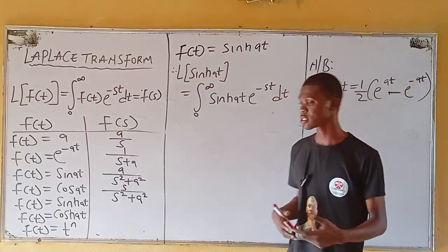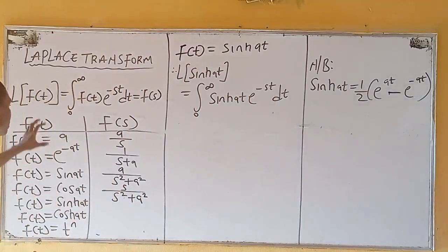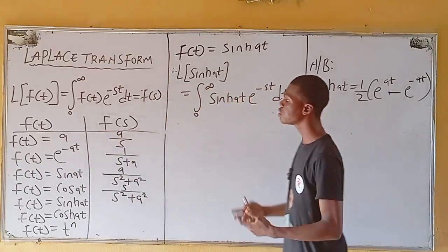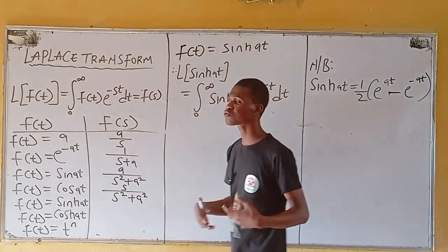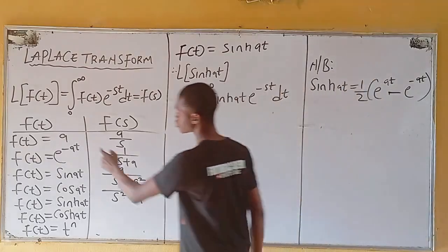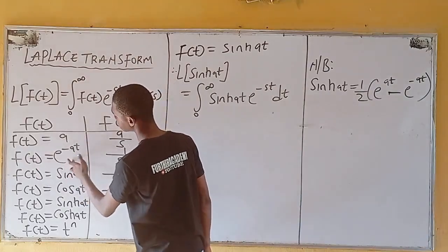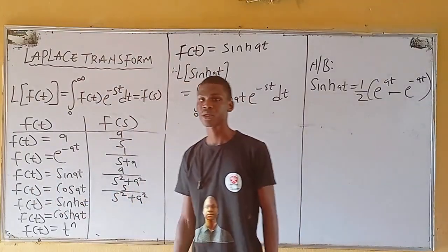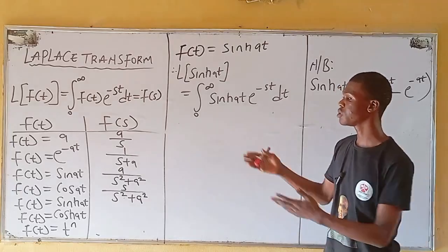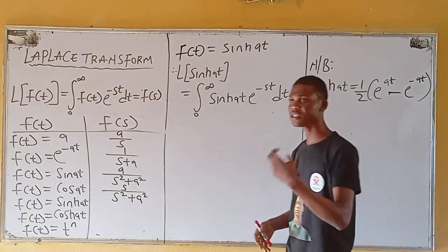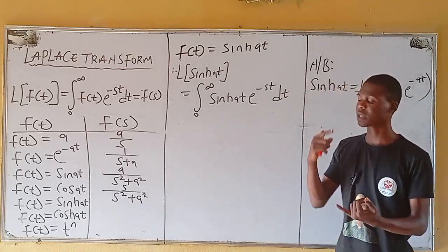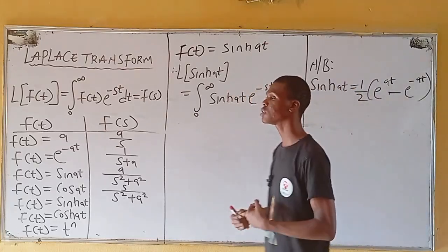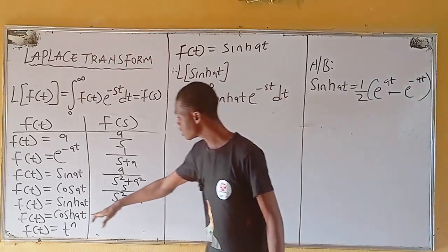We are still on Laplace transforms. When we started, we said these are the possible functions we'll be given. So far we've been able to transform four functions: when f(t) equals a constant, when f(t) equals e^(-at), when f(t) equals sin(at), and when f(t) equals cos(at). As the class proceeds we'll be implementing all of these. We have three theorems: multiplying by the exponential function, dividing by t, and multiplying by t raised to the power n.